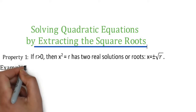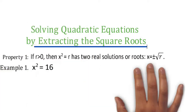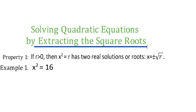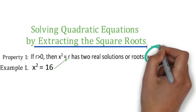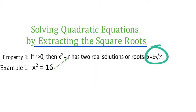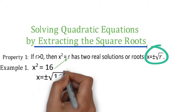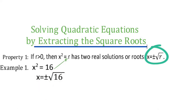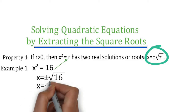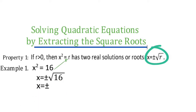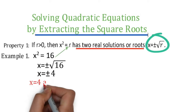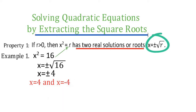Para maintindihan natin, gawa tayo ng example. First example: x squared is equal to 16. We have now the value of r, that is 16. Then we will use property number one. The value of x is equal to positive or negative square root of 16. Simplify: square root of 16 is 4. Since we have two real solutions or roots, the value of x is 4 and negative 4.